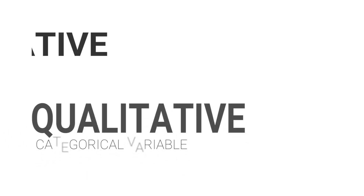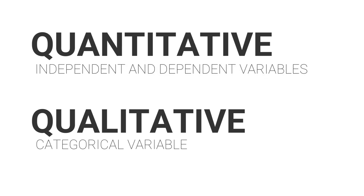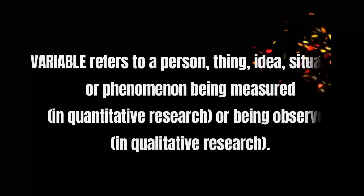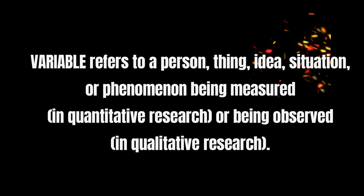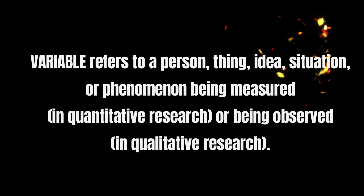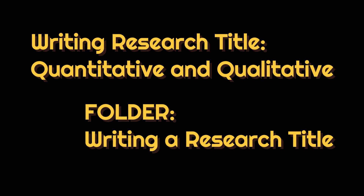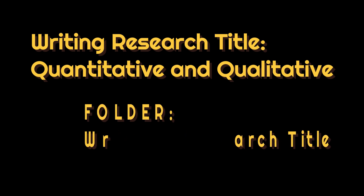In terms of forming a title, remember this: quantitative research has independent and dependent variables. While, on the other hand, qualitative research has categorical variables. When we say variable, it refers to a person, thing, idea, situation, or phenomenon being measured in quantitative research or being observed in qualitative research. For further explanation of research variables, watch my video lesson entitled Writing Research Title, Quantitative and Qualitative, which can be viewed from the playlist folder, Writing a Research Title.